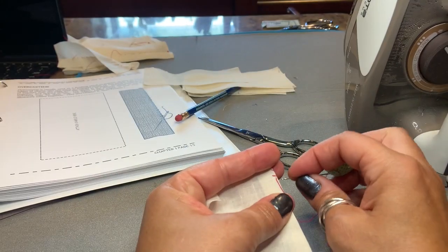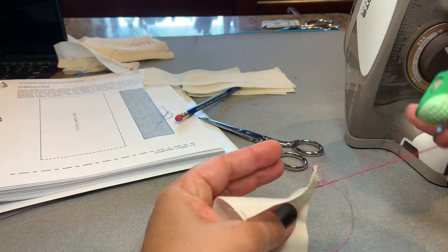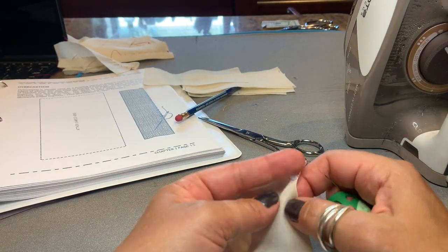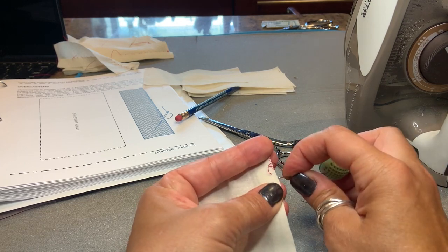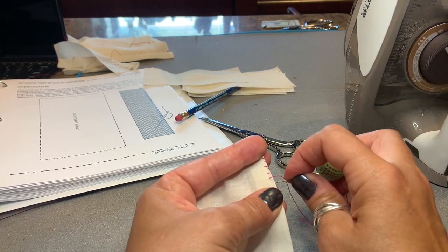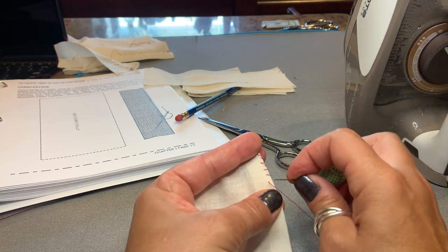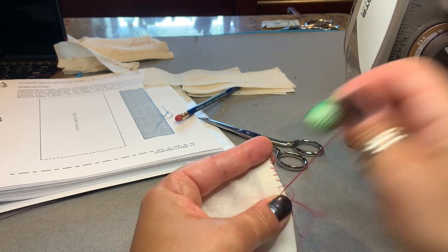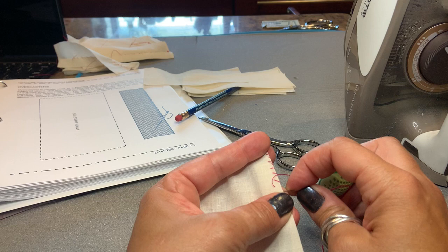Try to keep everything even—I gotta slow down. Try to keep all of the stitches at a slight angle, evenly spaced, and an even depth on the edge of the fabric.